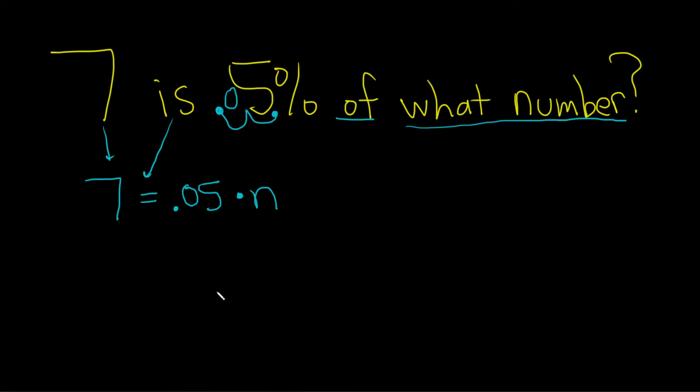To find n, we have to get rid of this 0.05. Because it's being multiplied by 0.05, to undo the multiplication, we have to use division. So what we'll do is write a line here like this, and I'll put a 0.05 underneath it like this.